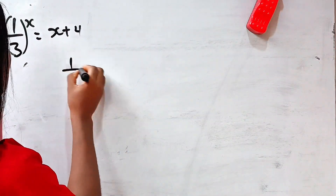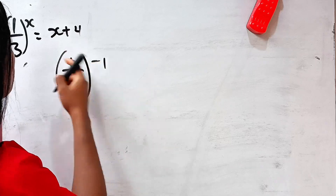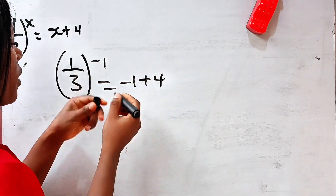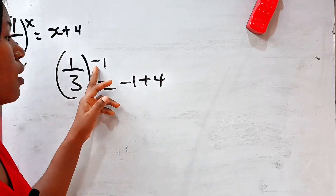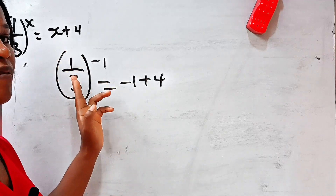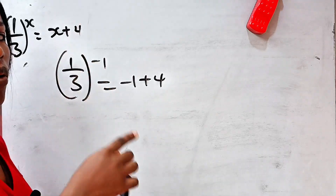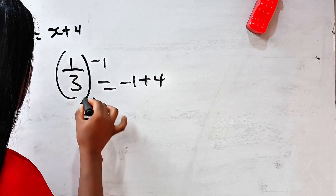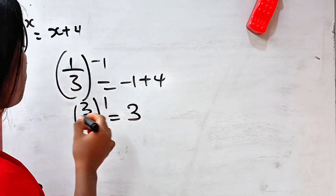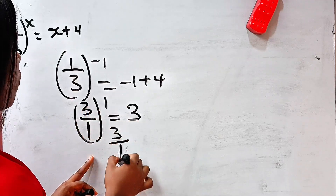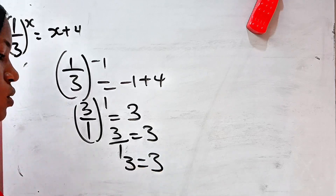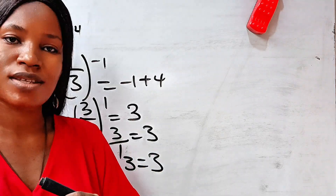The original equation with x = −1 gives (1/3)^(−1) = −1 + 4. When the power is negative, take the inverse of the base: the inverse of 1/3 is 3/1. So 3^1 = 3, and −1 + 4 = 3 as well. We have 3 = 3, which confirms our answer x = −1 is correct.